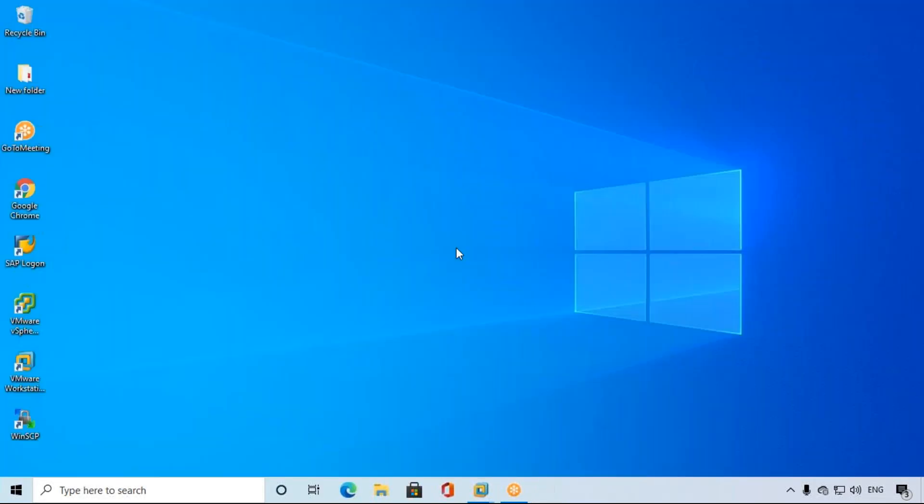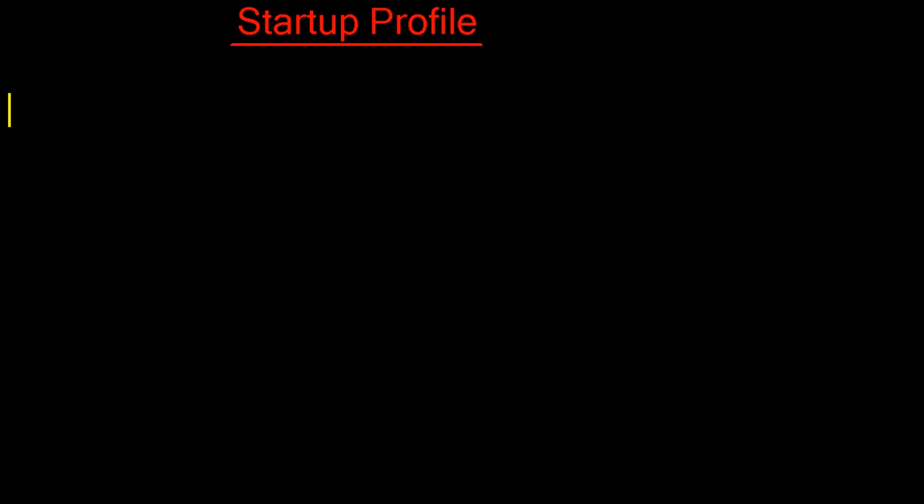Next one: the startup profile. The startup profile is used to start SAP and shut down SAP. If you want to start the SAP system, just go to SAP MMC, select the system you want to start, right-click on it and select start. Whenever we click start from SAP MMC, the system will check whether the startup profile exists or not at the OS level — in the D drive, under USR/SAP/[SID]/SYS/profile.